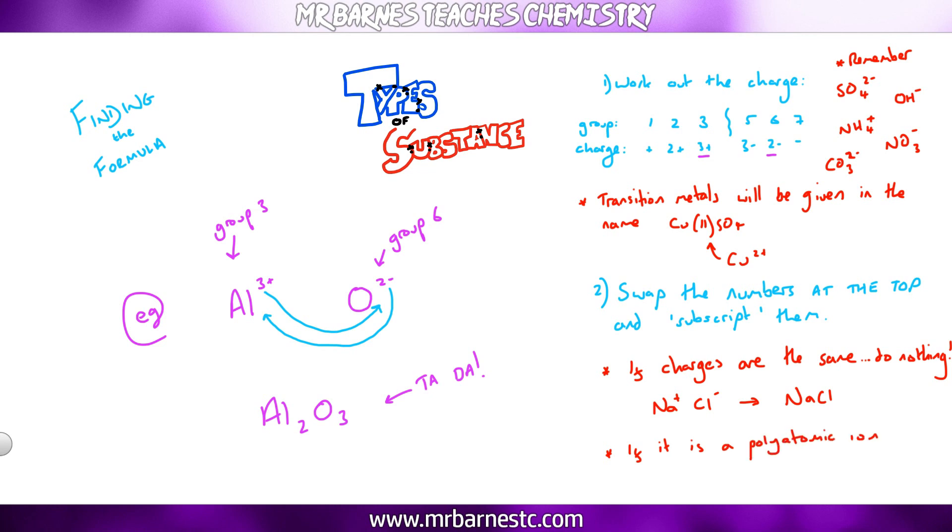And then the second thing, if you have a polyatomic ion, you must put a bracket around it if you are doubling it. So for example, aluminium reacting with a hydroxide, aluminium is 3+, hydroxide as you can see up here is OH-, I take the number at the top, I move it down to the bottom, but because I've now got 3 OH- polyatomic ions, I must put a bracket around to show I've got 3 of everything.